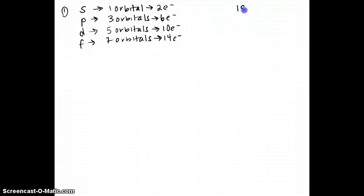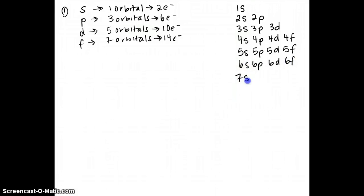Your first energy level just has an S orbital. Your second energy level has an S and a P. Your third energy level has an S, a P, and a D. Your fourth energy level has an S, a P, a D, and an F. Your fifth energy level has an S, a P, a D, and an F, and so on. Taking it down to seven or eight will usually be sufficient to cover all of the elements we'll be dealing with.